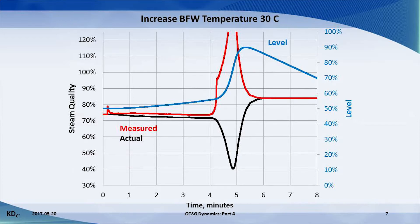For the first four minutes, there is no impact to the steam quality because the change in temperature has not yet impacted the liquid holdup. Then the actual quality, the black line, dips low when the extra water is kicked out. The measured venturi quality, the red line, spikes high with the extra water and reads over 100%. Then everything settles out. This sudden change takes place over about a minute.